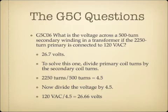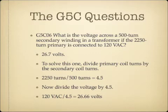What is the voltage across a 500-turn secondary winding in a transformer if the 2,250-turn primary is connected to 120 volts AC? The answer is 26.7 volts. To solve this, divide the primary coil turns by the secondary coil turns: 2,250 divided by 500 equals 4.5. Then divide the voltage by 4.5: 120 volts AC divided by 4.5 is 26.66 volts, which rounds up to 26.7 volts.